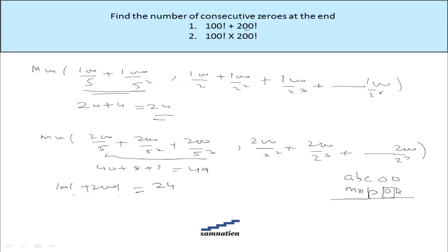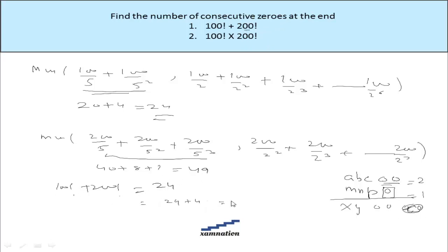But if we are multiplying the numbers, the last number will be some x, y and 3 zeros — because two zeros here and one zero here get added, so this will be 3 zeros: x, y and then 3 zeros. So for the case of product, we have 24 plus 49, which is 73. And in case of sum, we have 24.